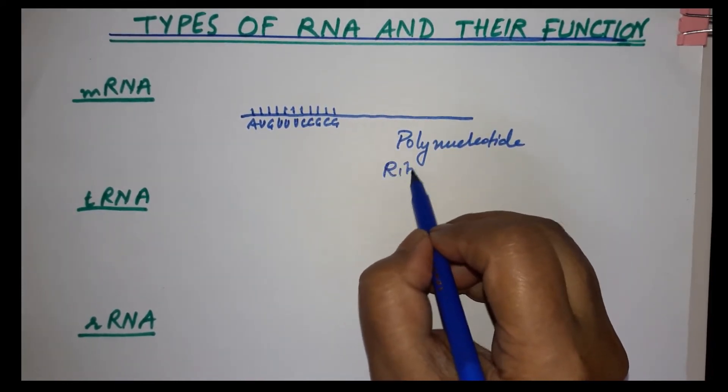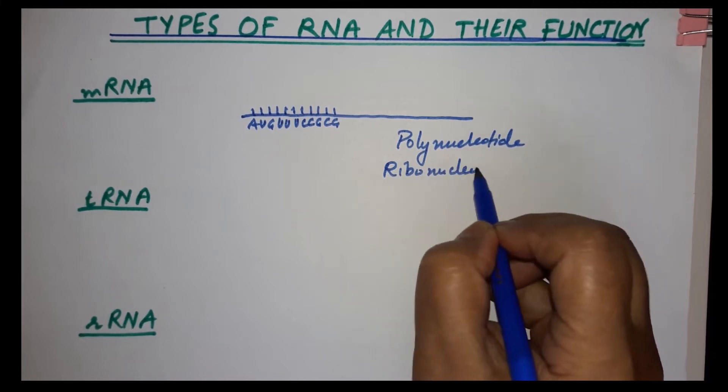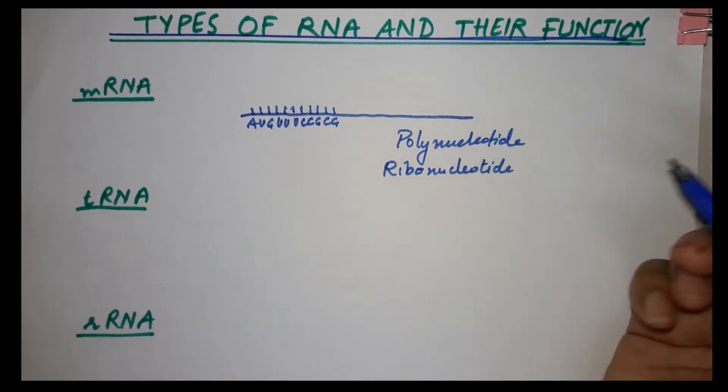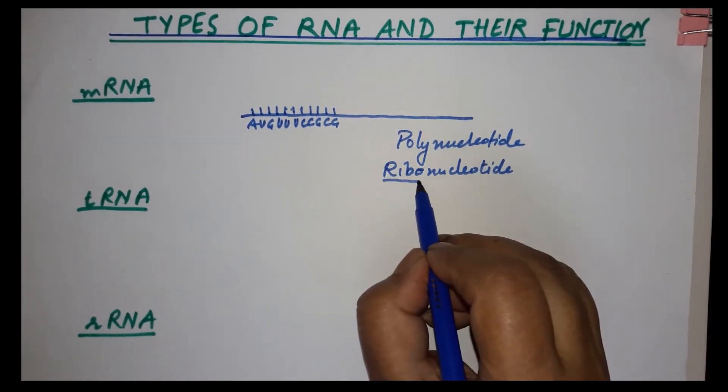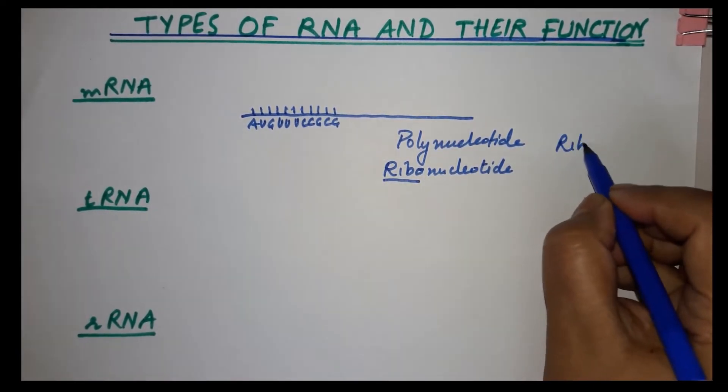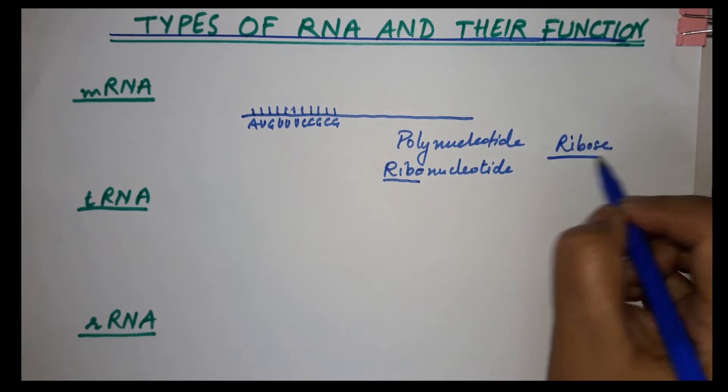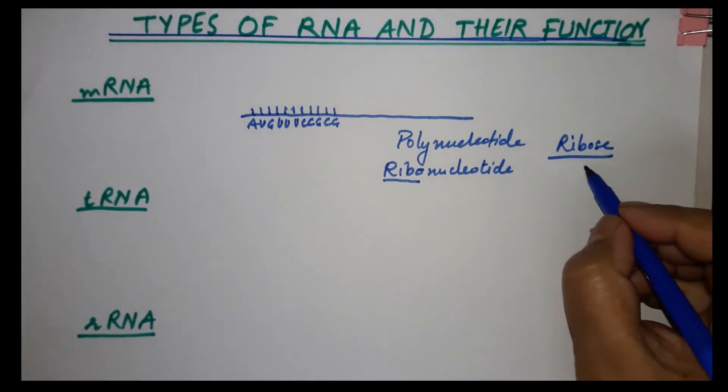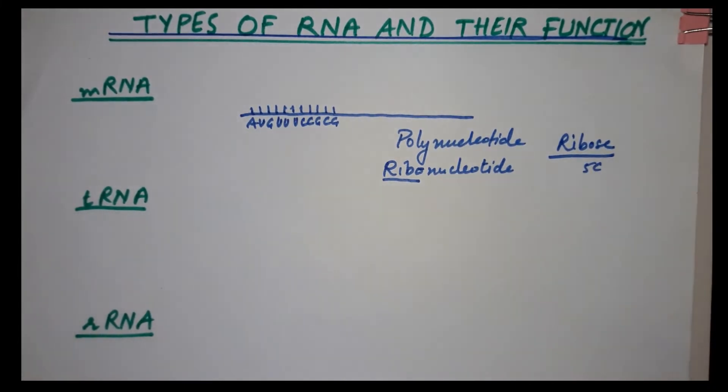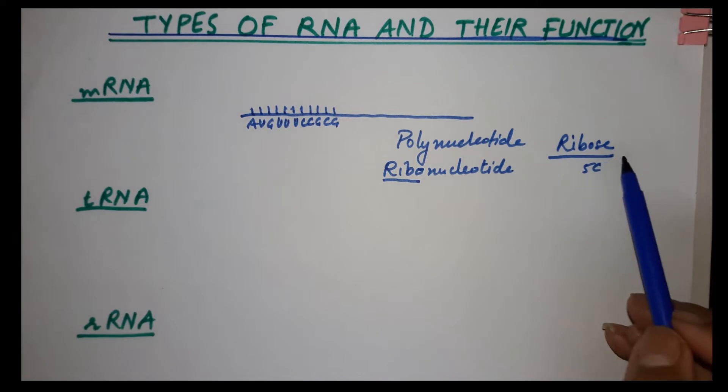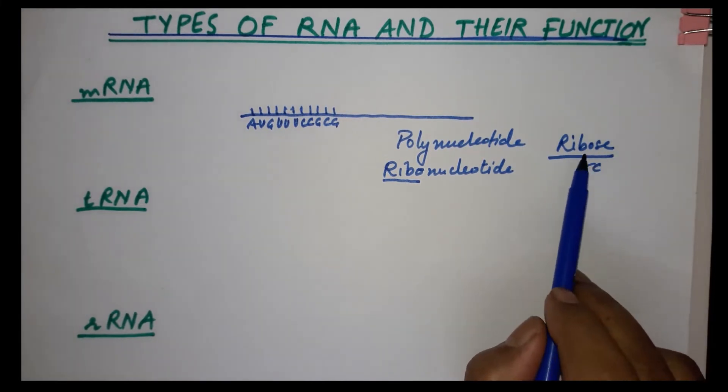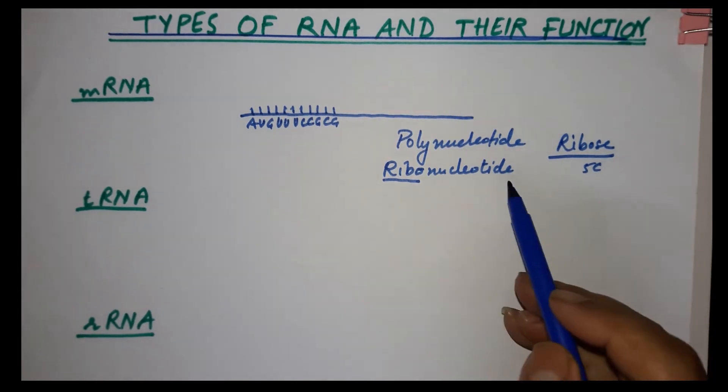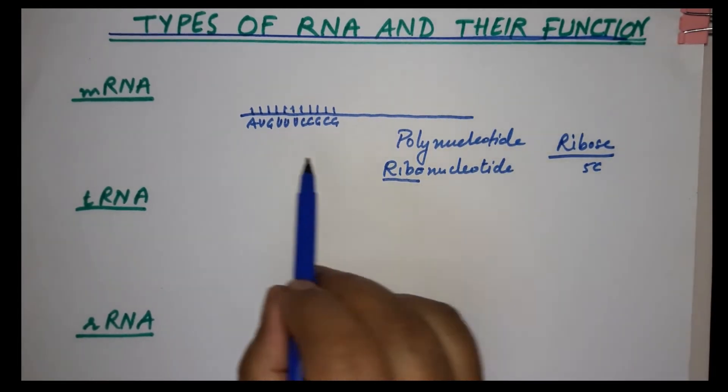It is ribonucleotide because instead of deoxyribose sugar, there is ribose sugar. In RNA there is ribose sugar, not deoxy. It's a 5-carbon sugar with a hydroxyl group. You must have studied in class 11th that ribose sugar is not deoxy.